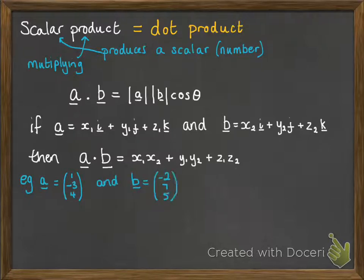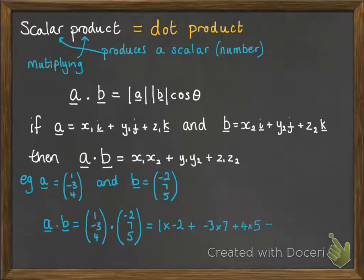We've got these two vectors, so if we want to find the dot product of those, this is all you do. So 1 times minus 2, minus 3 times 7, 4 times 5, add them all together. So we've got minus 2, minus 21, plus 20 gives us an answer of minus 3, and that's the scalar product.